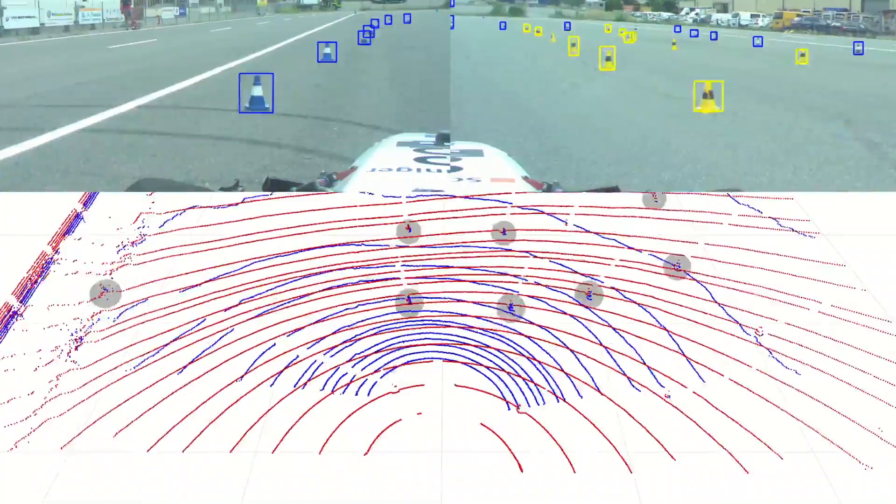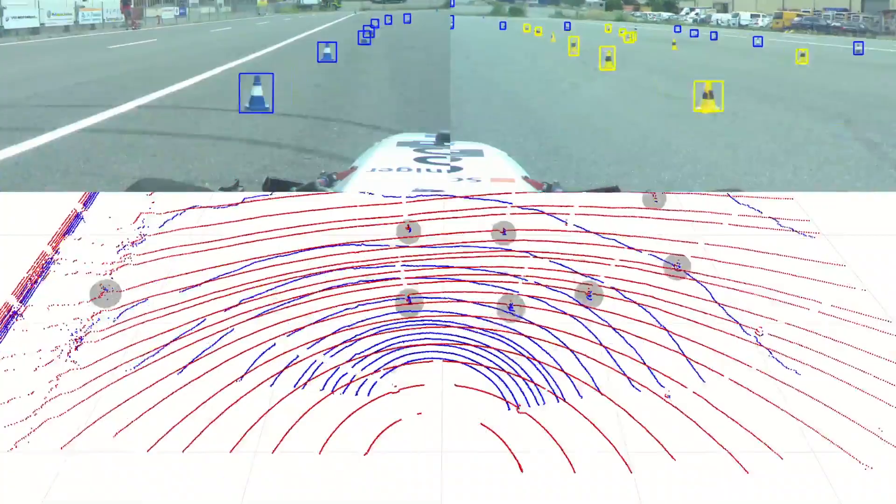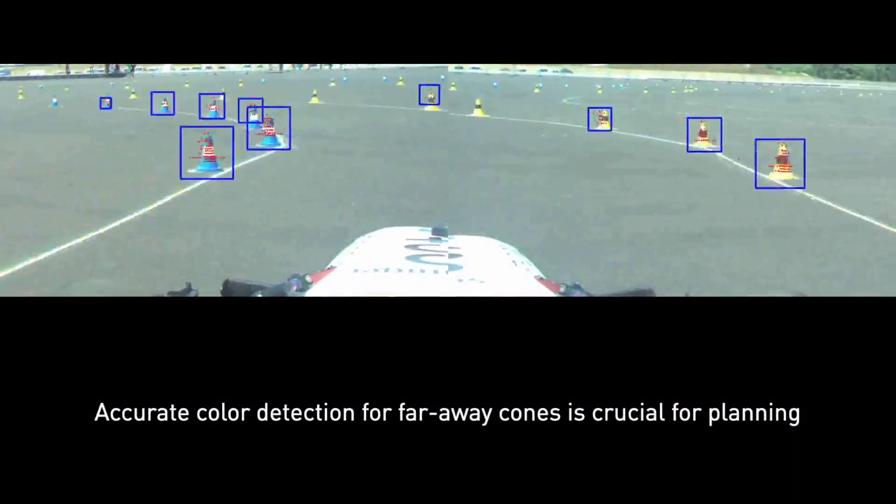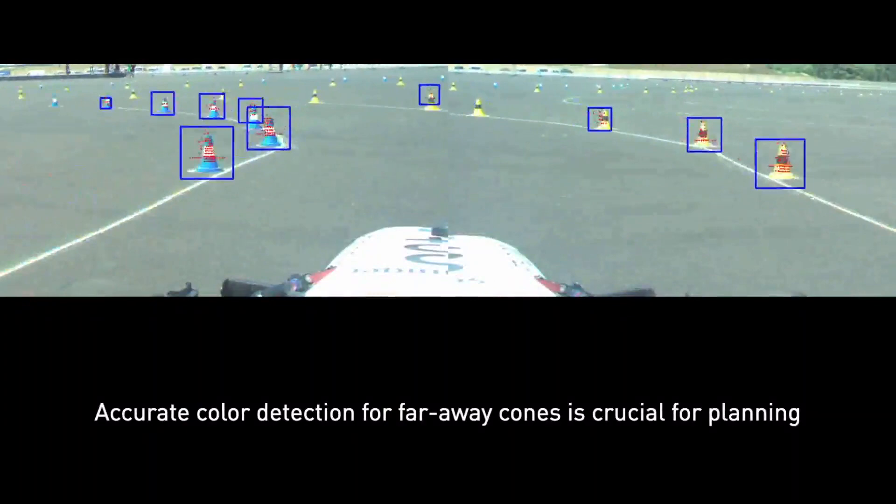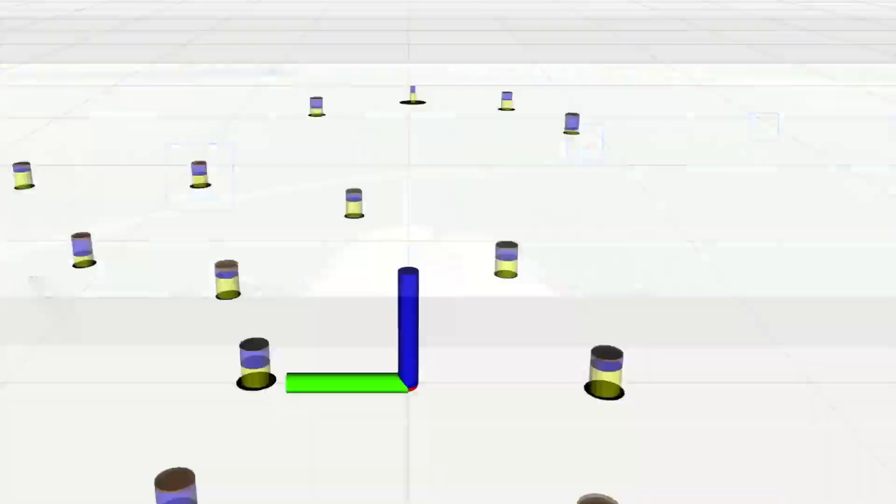Position and color of cones can be detected independently by camera and lidar pipelines. In an early sensor fusion approach, the cones detected by the lidar are projected into the images to improve color detection.